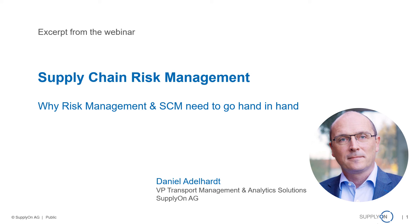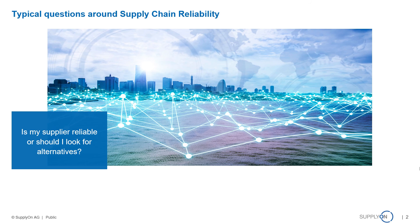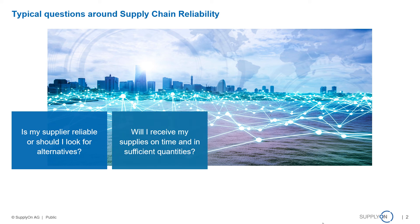When we talk about supply chain risks and supply chain reliability, some questions typically arise. Is my supplier still reliable, or should I look for alternatives? Should I look into second sourcing strategies? Other key questions include: will I actually get my supplies on time, and will I get them in the sufficient quantities that I ordered? These are key questions in supply chains.